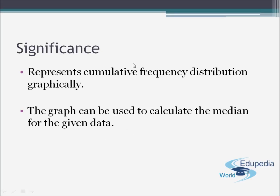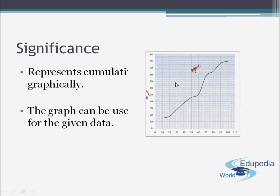So first of all, why ogive? What is its significance? Ogive is used to represent the cumulative frequency distribution graphically, and by that graph we can calculate the median for the given data. That is, ogive can simply be used to calculate the median for the given data. On the y-axis we will have cumulative frequencies, whereas on the x-axis we can either have upper limits or lower limits of the given class intervals.